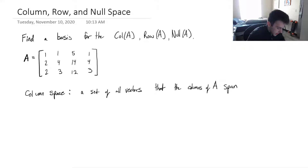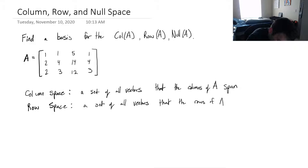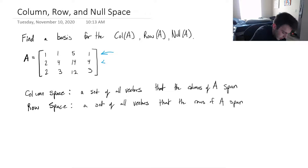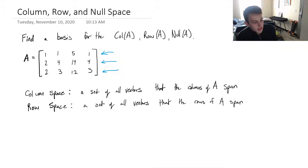Similarly, if you can remember the column space, the row space is very, very similar. It's also a subset — the set of all vectors that the rows of A span. If we were to take these rows here and take all possible linear combinations, and typically we take the transpose of those rows so we read them vertically, we would have three vectors in R4. It's just the span of those rows, of those vectors.